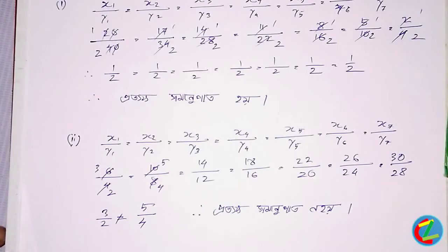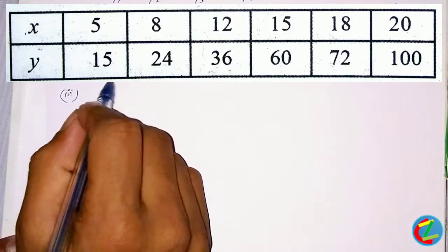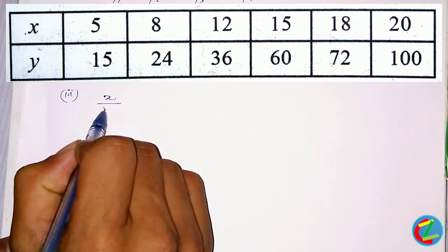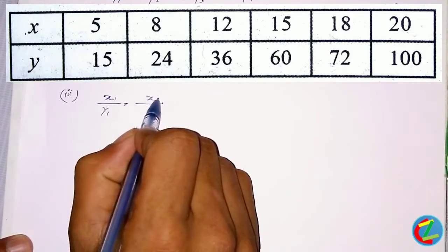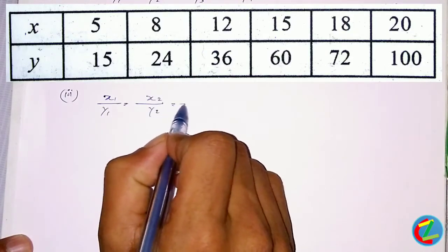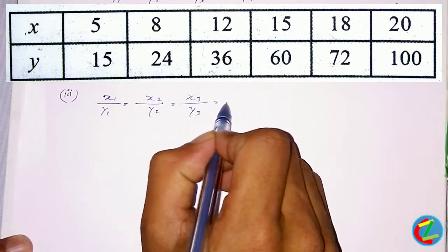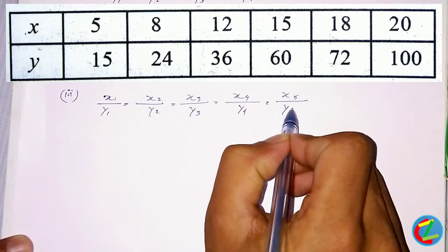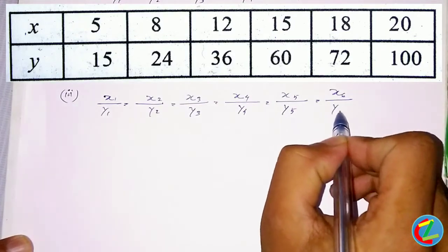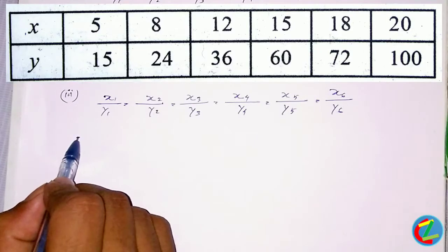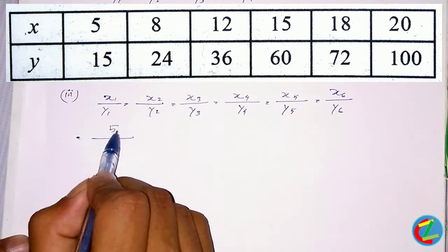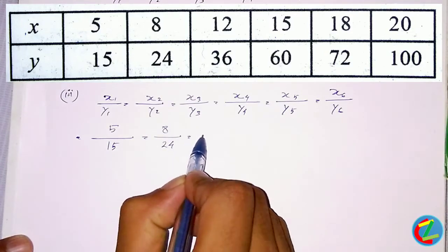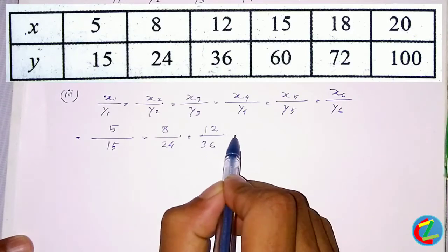This video will show you the result. The first thing is that XR is a result of XR. 5 divided by 15, 8 divided by 24, 12 divided by 36.